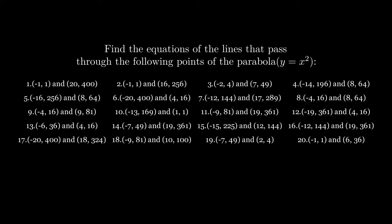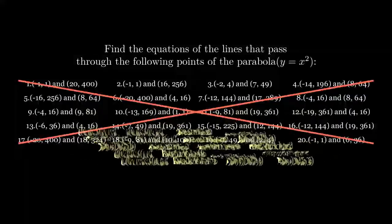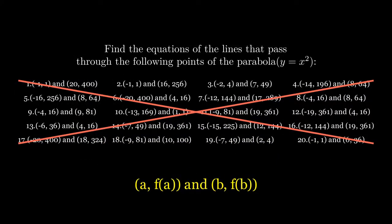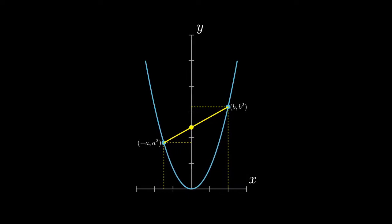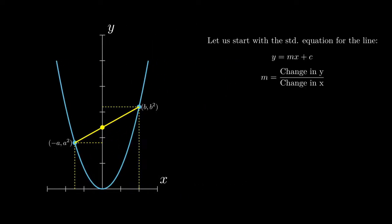So you can find the equations of lines that pass through points of the parabola individually, or you could find a generalized formula and then just plug in the points. You start off by drawing an arbitrary line across a parabola and write down the standard equation of a line.